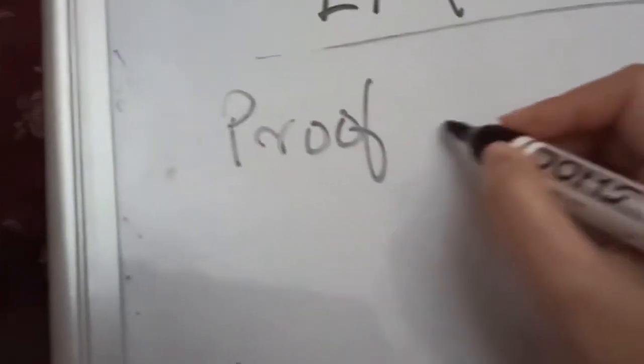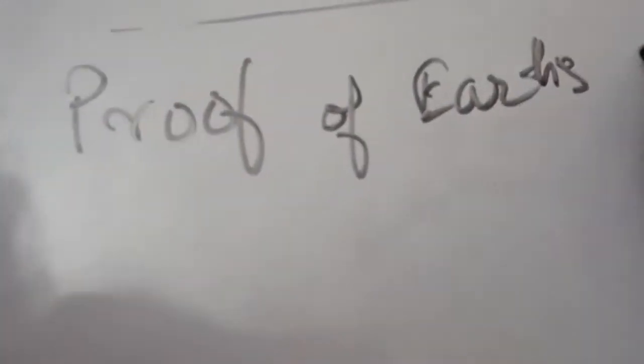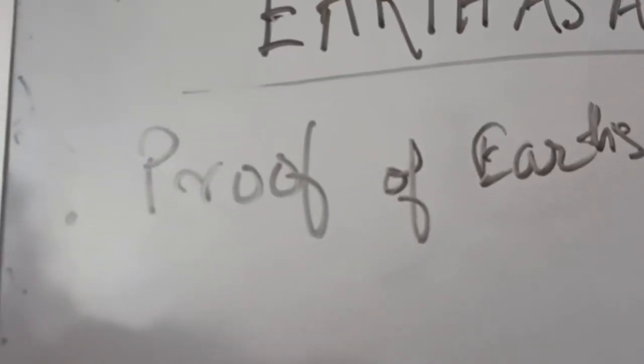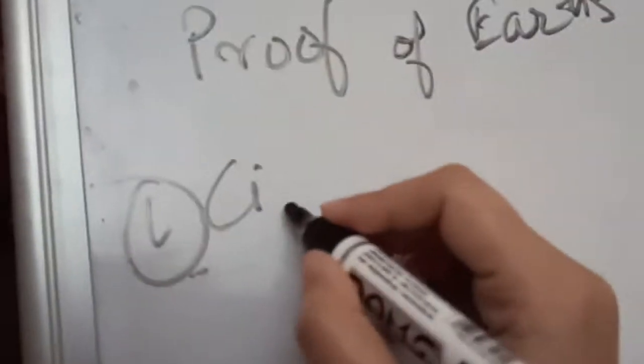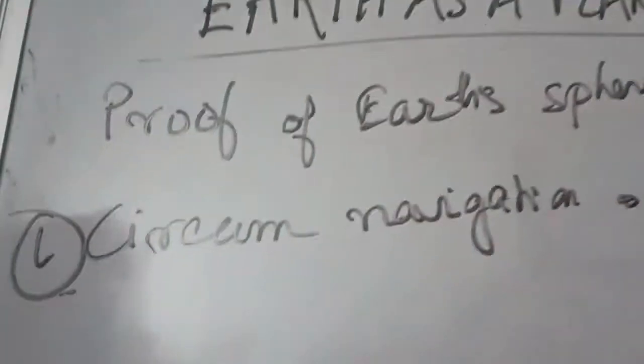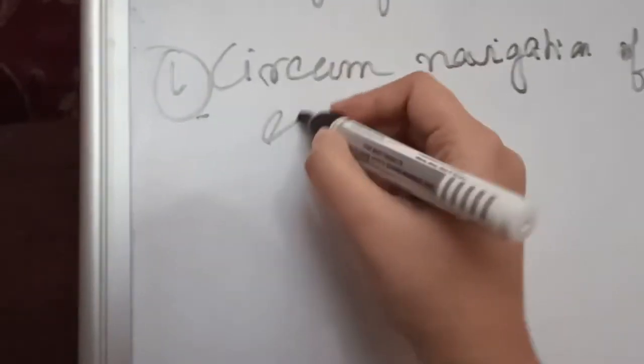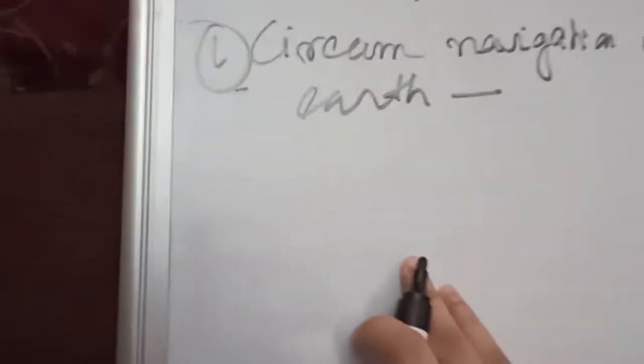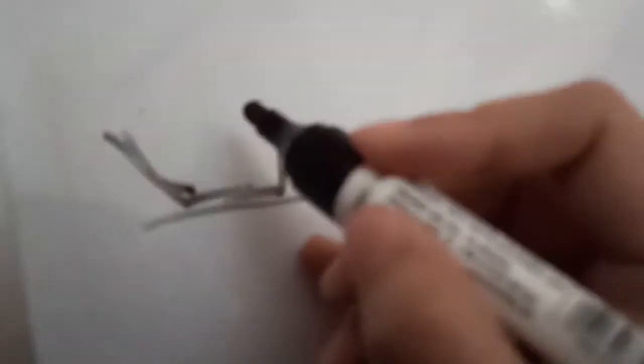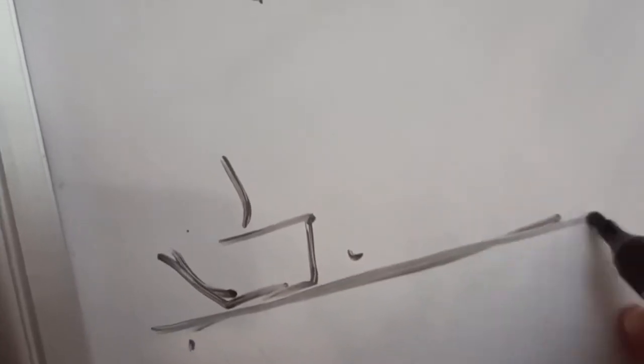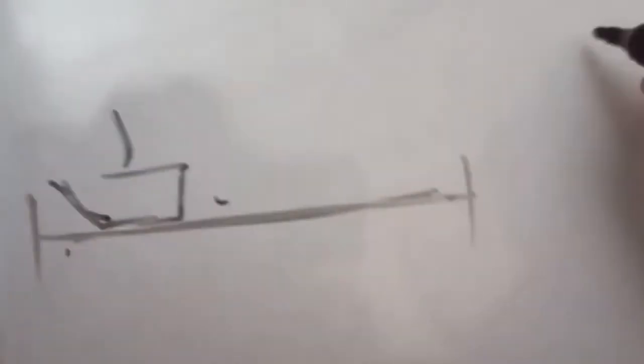The next is proof of Earth's sphericity. The first proof is circumnavigation of the Earth. It was first believed that the Earth was a flat surface. Ferdinand Magellan started a journey with ships and crew and sailed over the oceans. The concept that was first believed was that the Earth is a flat surface with some edges, but they never found any edges when they were traveling.